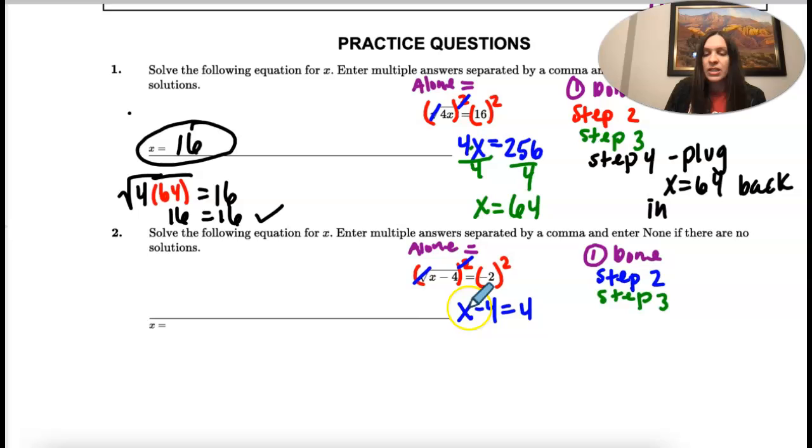Step three is when we solve. So for this one, it's x minus four. To get x by itself, I take the opposite of minus, and I add. So I'm going to plus four on both sides and get x equals eight.